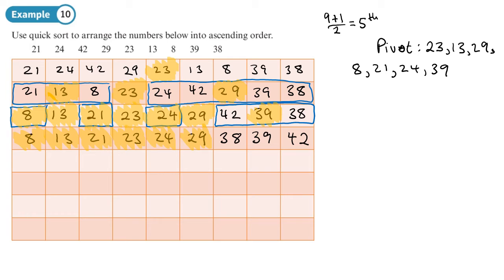Just two small sub-lists remain with 38 and 42 not yet chosen as pivots. They each pivot around themselves, giving 38 then 42. Since every element has now been chosen as a pivot, the list is in order. This is quicker than a bubble sort.